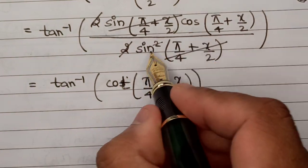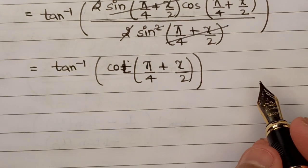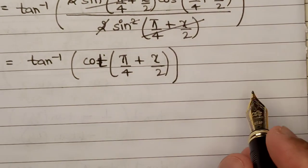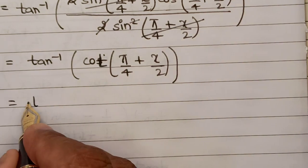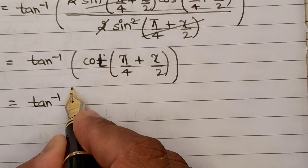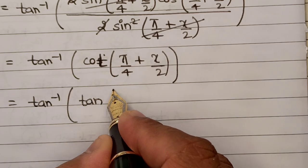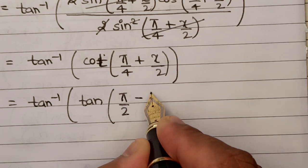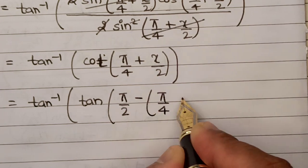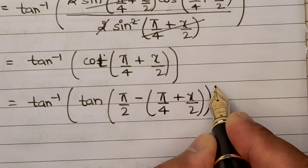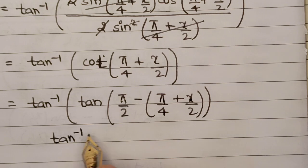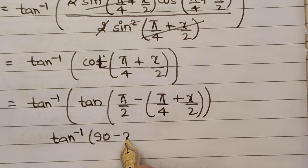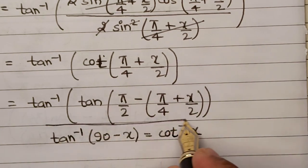Now we do know of an identity for inverse trigonometry where tan inverse and cot inverse are related to each other. So this can be written as tan inverse of tan pi by 2 minus pi by 4 plus x upon 2. Basically, the formula that I've used here is that tan inverse of 90 minus theta is cot inverse theta. This is the identity that I've used here to convert cot inverse into tan so that it can be cancelled out from this tan inverse which is situated outside.